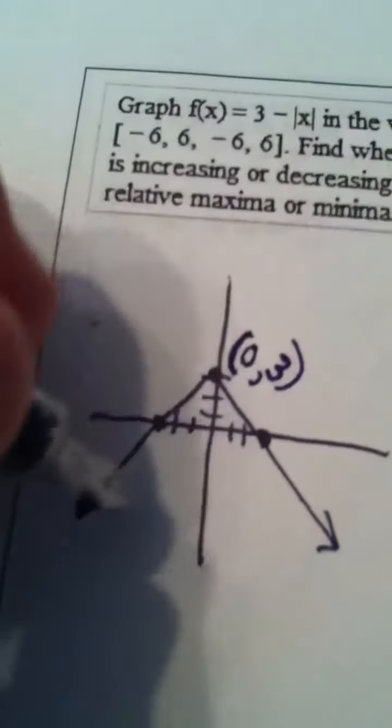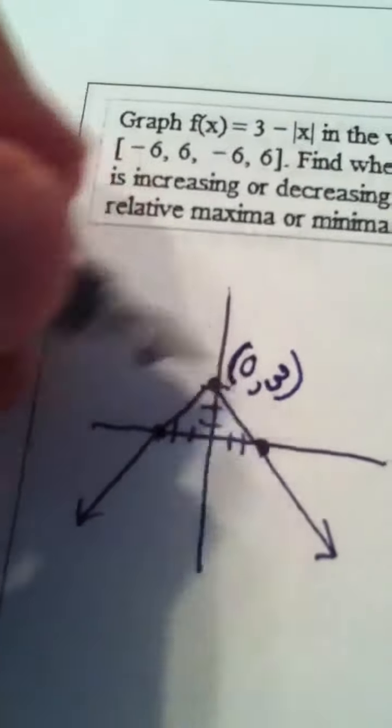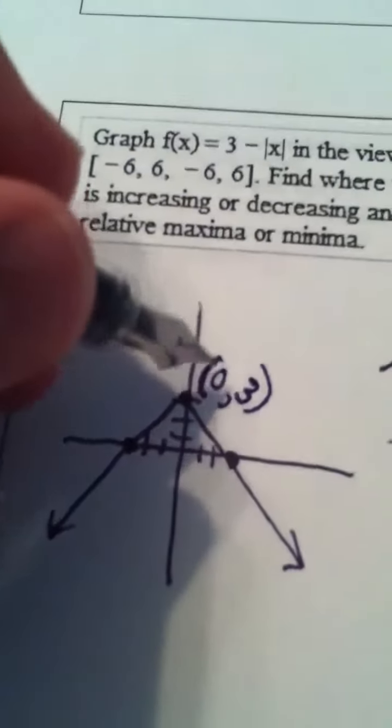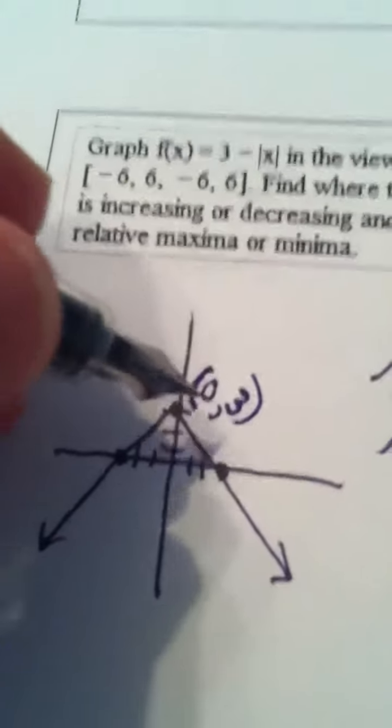Relative maximum. The only point where that even occurs here, the top of the hill, is at 0, 3, and remember that the maximum is always the y value, so the relative maximum is 3.